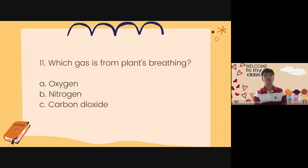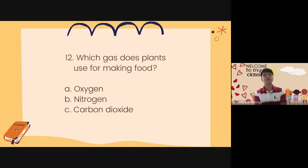Number 11. Which gas is from plants breathing? A. Oxygen. B. Nitrogen. Or C. Carbon dioxide. Number 12. Which gas do plants use for making food? A. Oxygen. B. Nitrogen. Or C. Carbon dioxide.